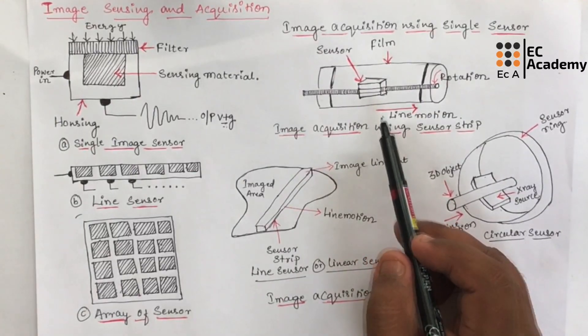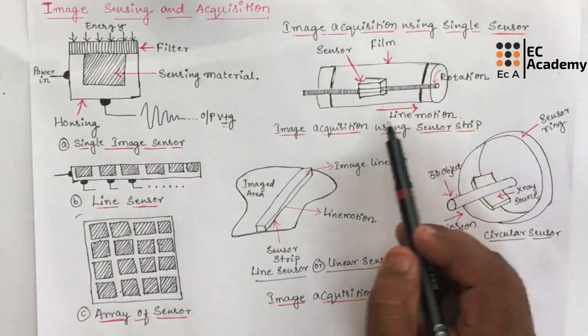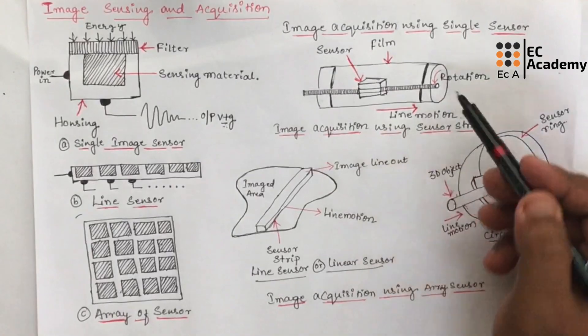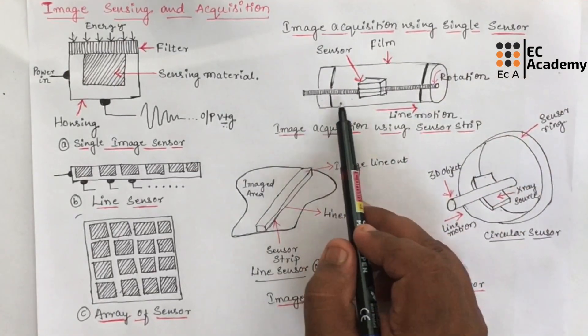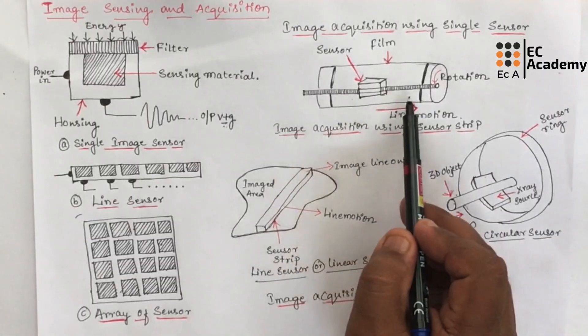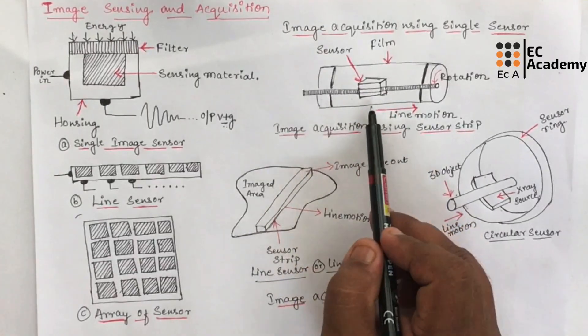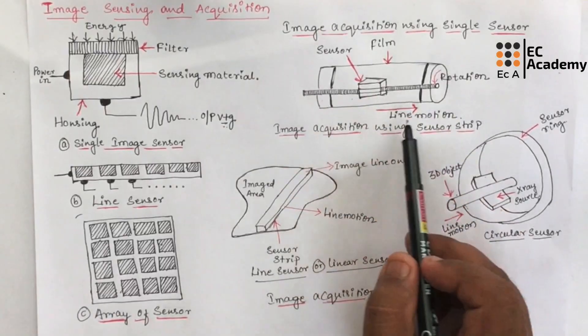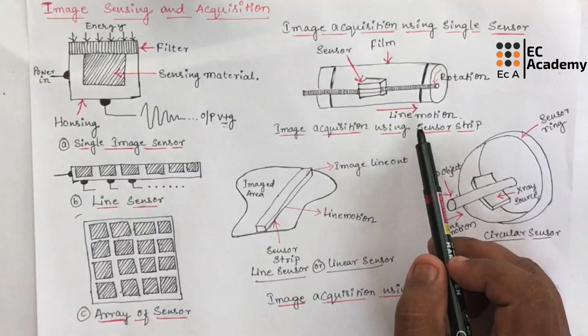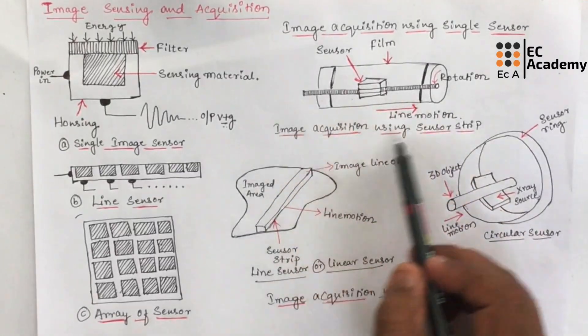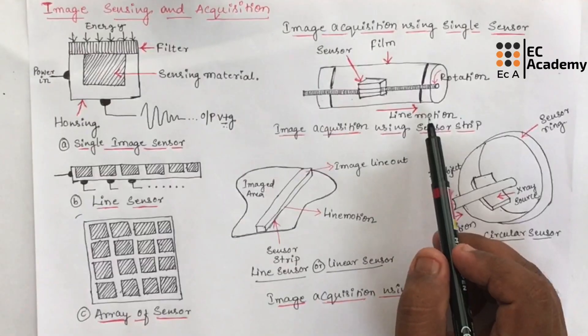This figure shows an arrangement that is used in high precision scanning, where the negative film is mounted onto the drum, whose mechanical rotation is provided by the displacement in one direction. And the single sensor is mounted onto a LED screw that provides motion in perpendicular direction. This method of image acquisition is expensive, but it is slow to obtain high resolution image. The mechanical digitizers which are used are known as micro densitometers.